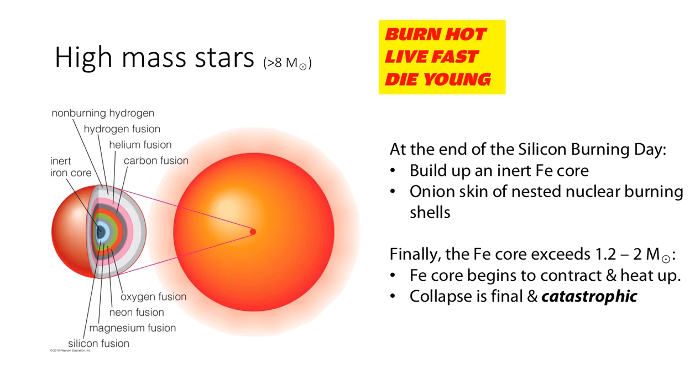That core is as far as we can go. Iron is the end of the line for nuclear fusion. You can't create any more energy by fusing iron. Instead, it takes up energy. So when that iron core begins to contract and heat up, there's nothing there to generate the radiation pressure needed to oppose the gravitational motion, the collapse is final, and the collapse is catastrophic.